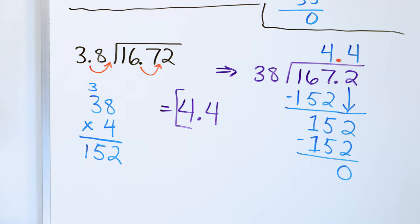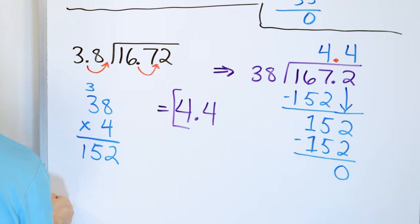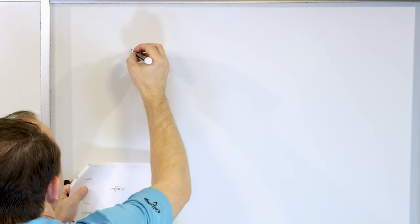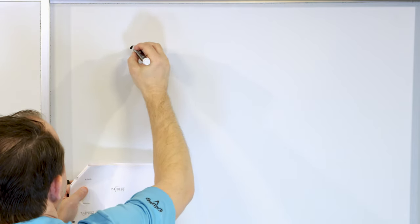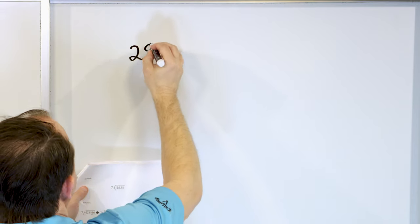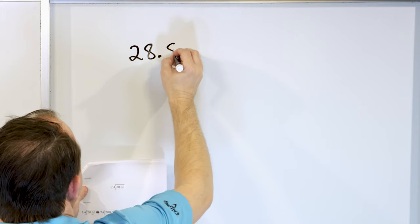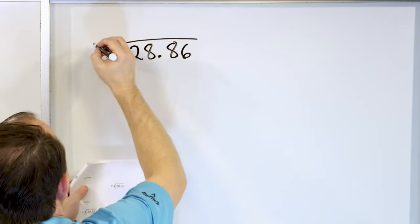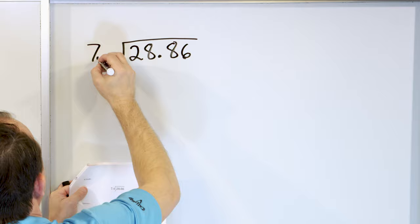Alright, I know it's a lot, but really when you get the hang of it, you realize there's really only one more step in the beginning, and that is moving the decimal point. Let's take a look at the problem 28.86, and we'll divide that by 7.4.